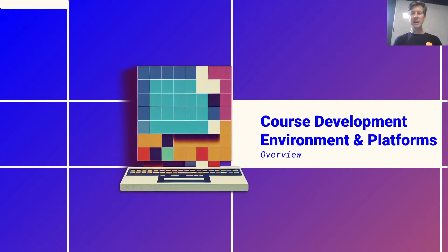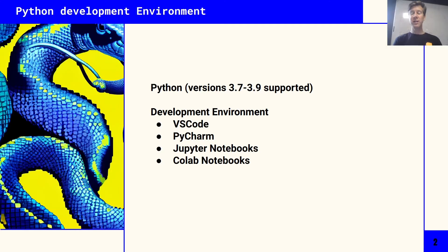Welcome to this lecture on the development environment and the platforms we're going to use in the serverless ML course. We're going to use the Python programming language versions 3.7, 3.8, and 3.9. We're using 3.7 because Colab uses 3.7 currently, and you can use 3.8 or 3.9 in Jupyter Notebooks, PyCharm, VS Code, or whatever your IDE of choice is.